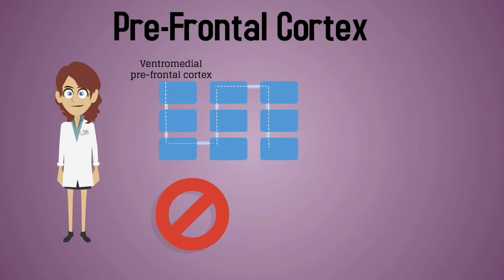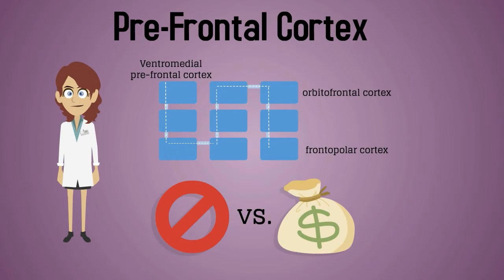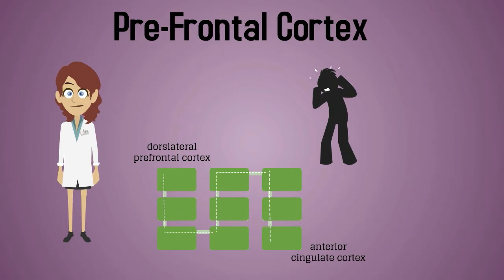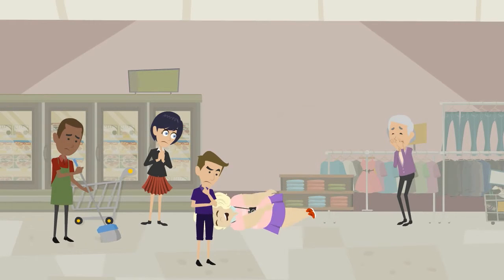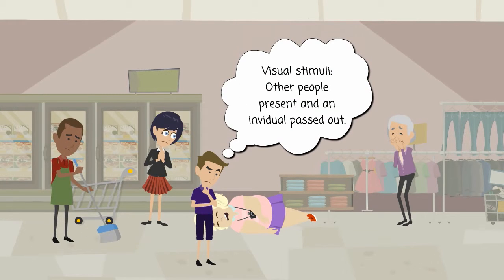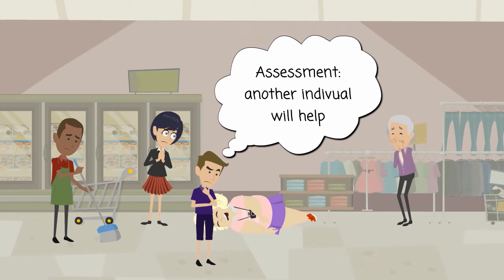One network involves the ventromedial prefrontal cortex, which evaluates risk and reward as part of a neural network that also includes the orbitofrontal and frontopolar cortex. The second network consists of the dorsolateral prefrontal cortex, forming a network with the anterior cingulate cortex. Together, this network determines how you react based on your decision. When the bystander effect occurs, each individual uses their parietal, occipital, and temporal lobe to process their surroundings. Based on this information, the prefrontal cortex within the frontal lobe assesses the presence of other people. Then, the two networks within the prefrontal cortex interact to determine that another individual will help.